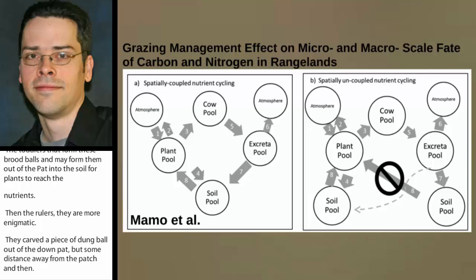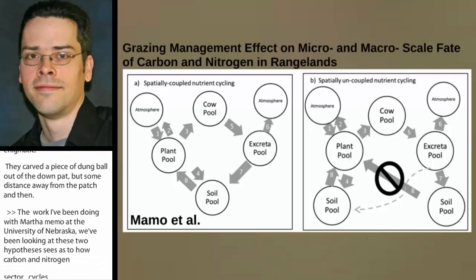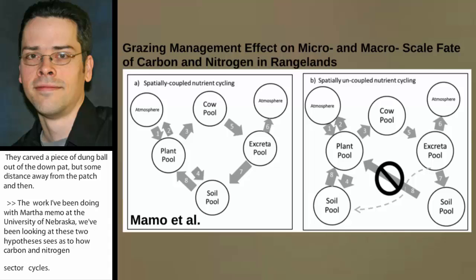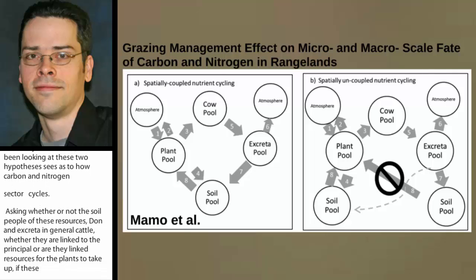In work I've been doing with Martha Mammo and others at the University of Nebraska, we've been looking at two hypotheses about how carbon and nitrogen cycles on rangeland might be influenced by dung beetles — specifically whether the soil pool of resources from cattle dung and excreta are linked to the plant pool, and whether different grazing strategies, such as continuous grazing or rotational methods, might separate these two pools more than others.